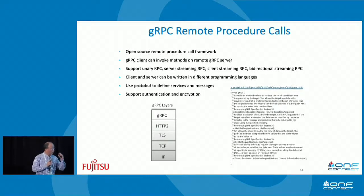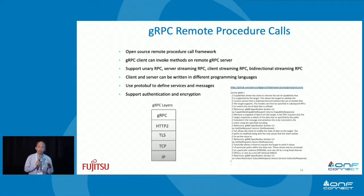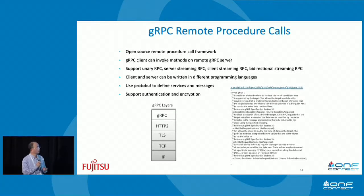Remote Procedure Call (RPC) allows a client to invoke a service on a remote device, and the device responds back with information. gRPC has tool sets to build clients and stubs to help read and write messages very simply. Your client and server can be written in different programming languages, use Protocol Buffer to send data, and support authentication and encryption using TLS. GNMI is built on gRPC and defines the capability, get, set, and subscribe services.